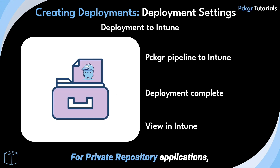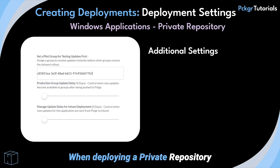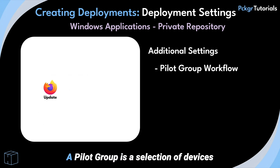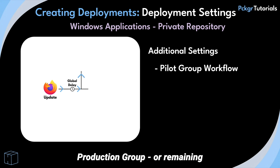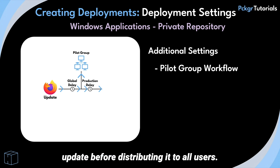For private repository applications, there are some added features to specify prior to deployment. When deploying a private repository application, you can control how and when updates roll out using the Pilot Group, Production Delay, and Global Delay features. A Pilot Group is a selection of devices that will receive the application update first, with a delay before the production group or remaining devices receive the update. This allows for testing of the application update before distributing it to all users.